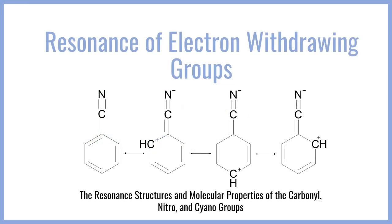Hey everyone, welcome to BCP Med. In this video we're going to be taking a look at the resonance structures of several electron withdrawing groups. Specifically, we're going to be focusing on the carbonyl, which is the C double O bond, the nitro group, or the NO2 group, and the cyano group, the CN group.